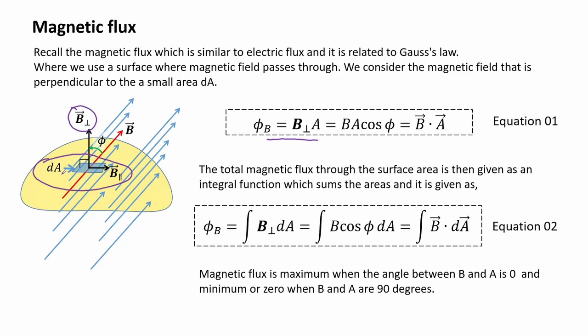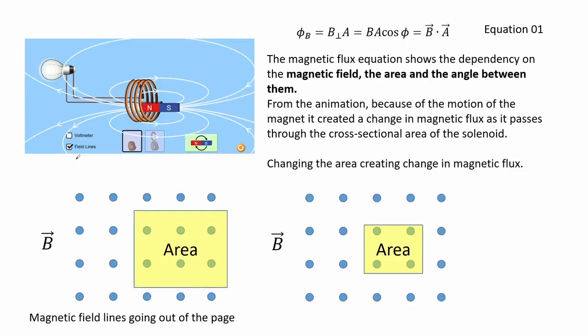Gauss' law is written mathematically as shown in equation 1. We can also write this in integral form when the case requires a non-uniform shape area as shown by equation 2. We recall that the magnetic flux is maximum when the angle between B and A is 0, and minimum or 0 when B and A are 90 degrees. From the magnetic flux equation we see the dependency on the magnetic field, the area, and the angle between them.